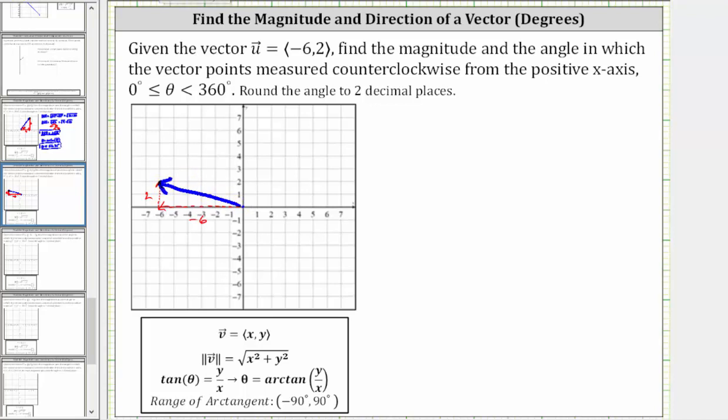Notice how by sketching the x and y components, we now have a right triangle in the second quadrant, which we can use to determine the magnitude, which is the length of the vector.